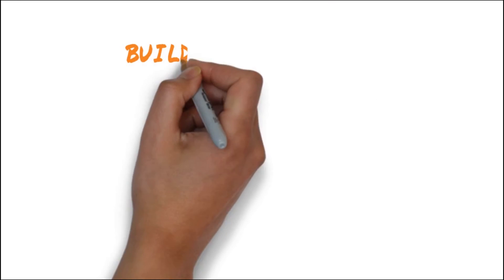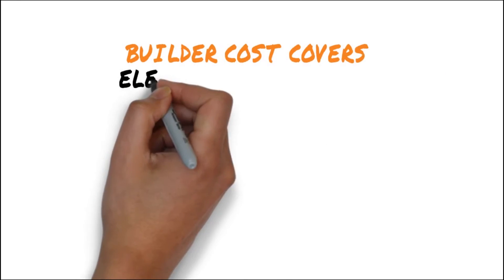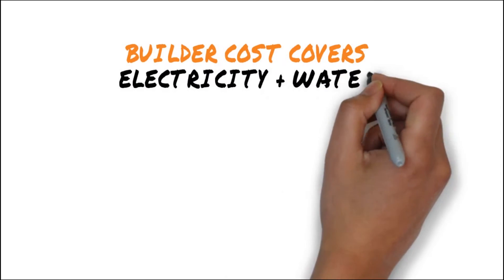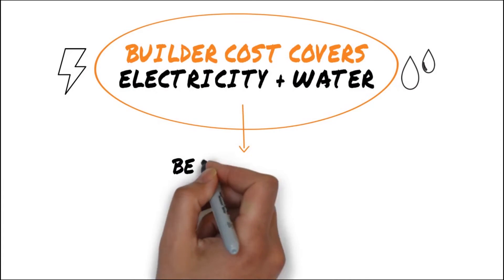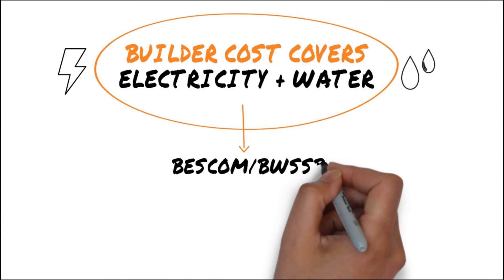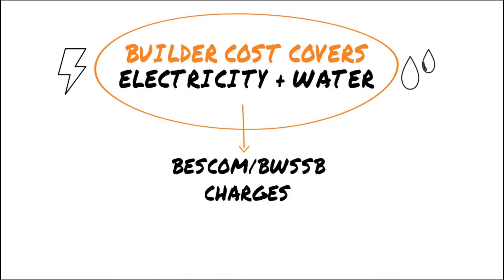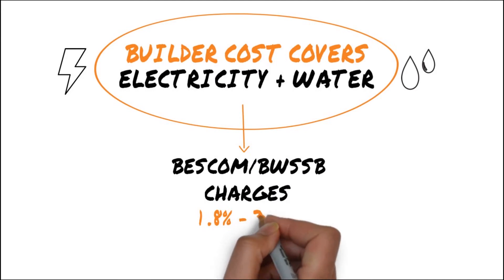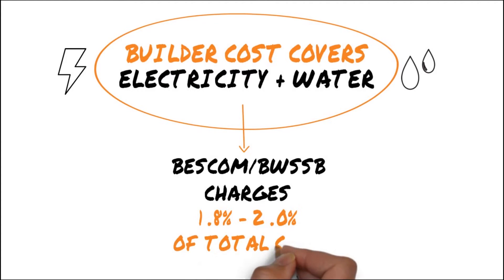Did you know that the builder cost covers the fees for your electricity and water connection? These are labeled as BESCOM or BWSSB charges and you pay the cost to the builder who then files the requisite paperwork. Expect these charges to be approximately 1.8% to 2% of the total cost.